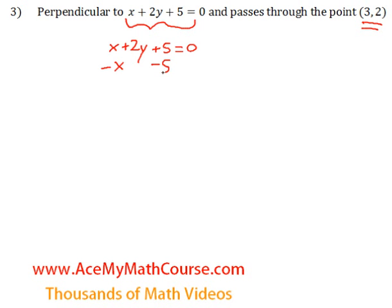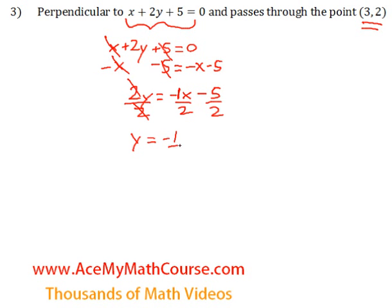We can subtract x and 5 from both sides of the equation because we want to isolate y completely. So 2y is equal to negative x minus 5. Then I can divide both sides by 2. So y is equal to negative x over 2. There's a hidden 1 here. So I can rewrite this as negative half x minus 5 over 2.